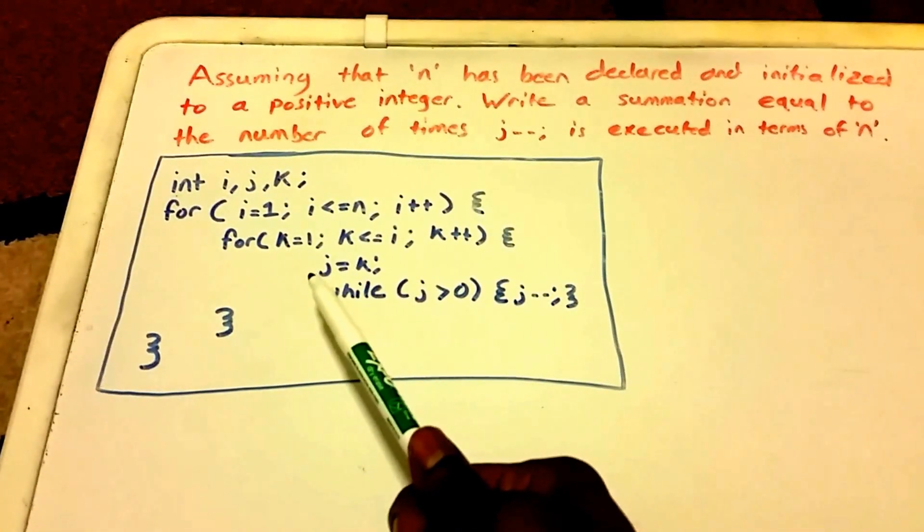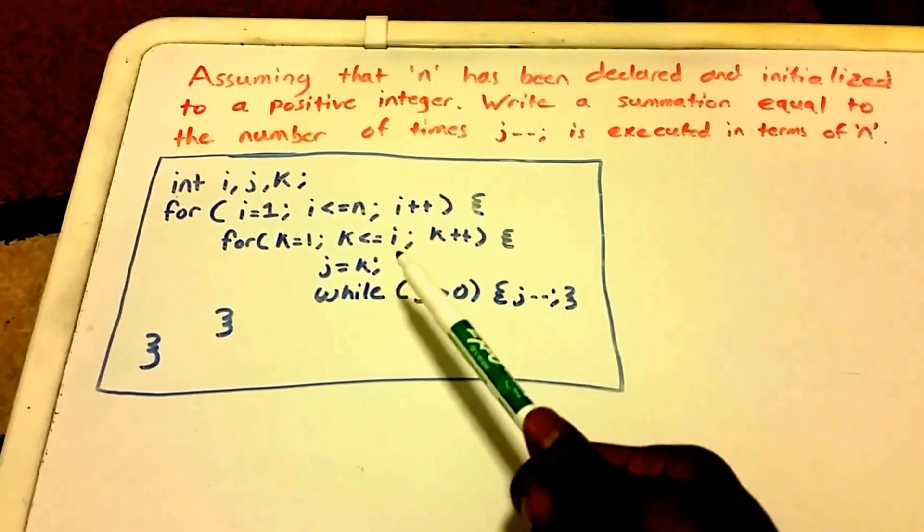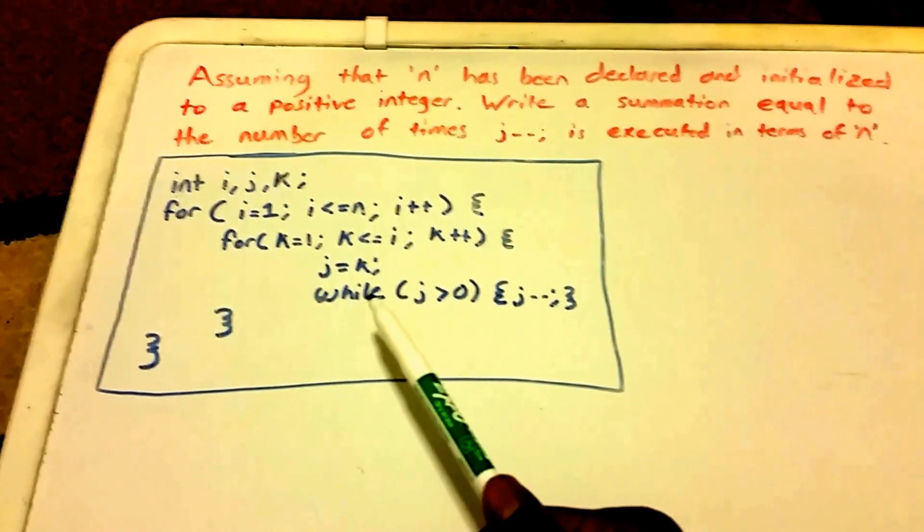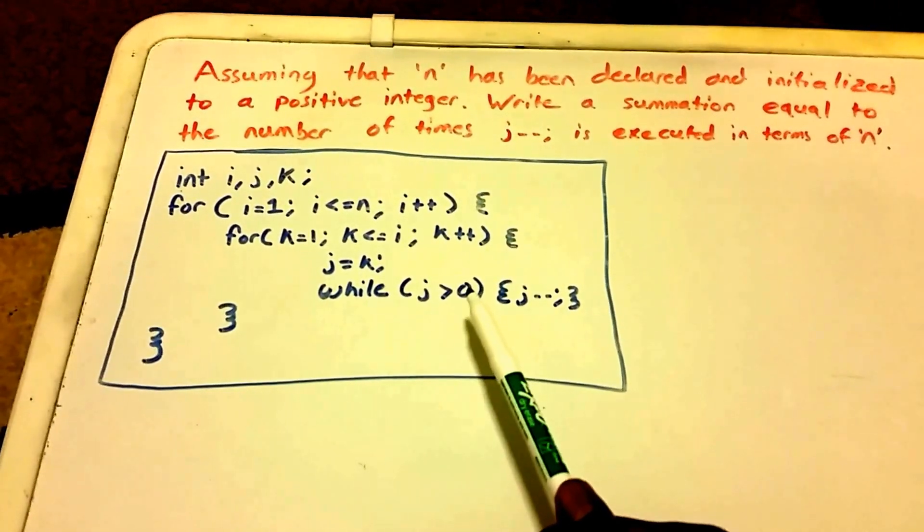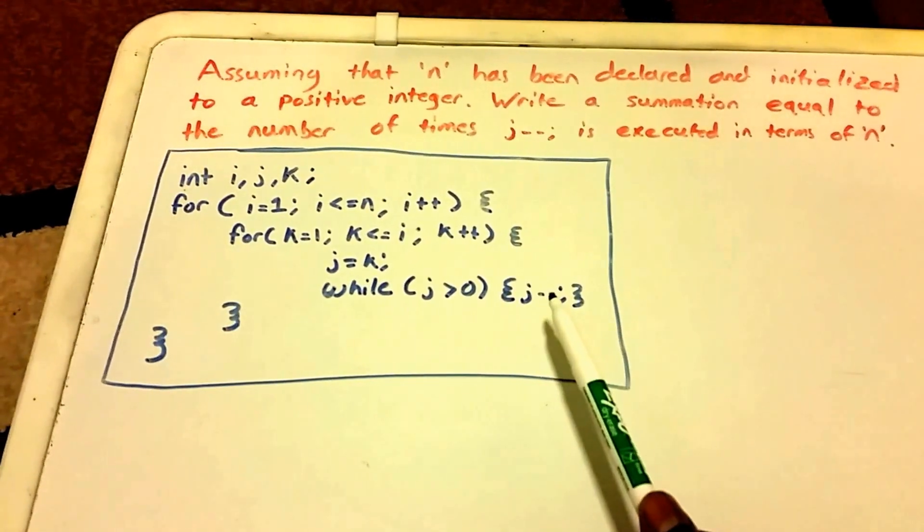Then it assigns j equal to k. And then within this loop, there's another loop, a while loop, and it's going to run while j is greater than zero, and then it's going to execute j minus minus.